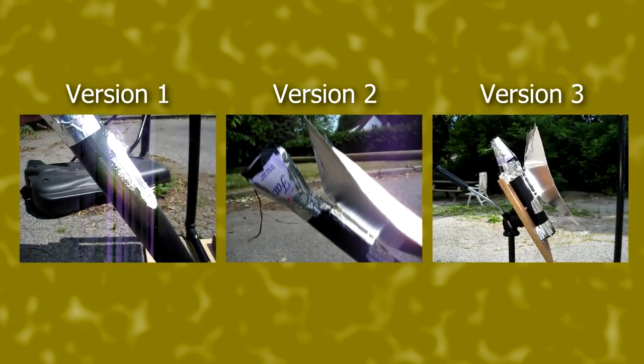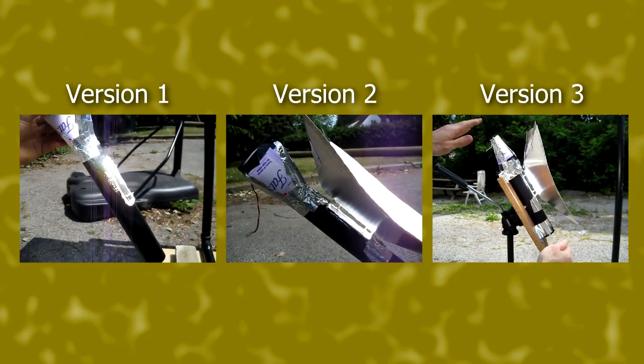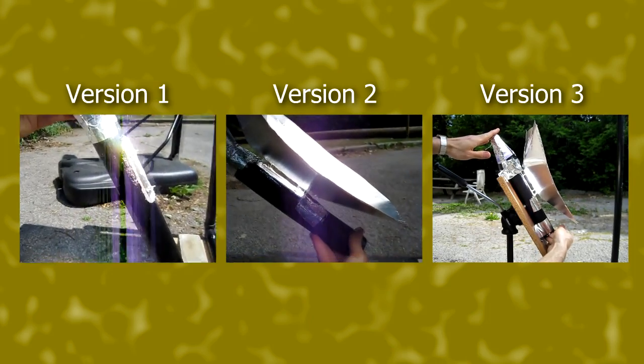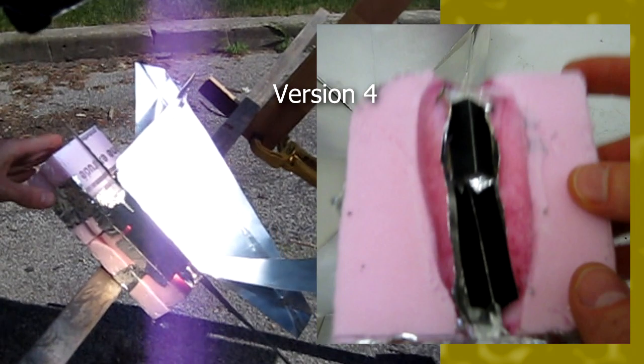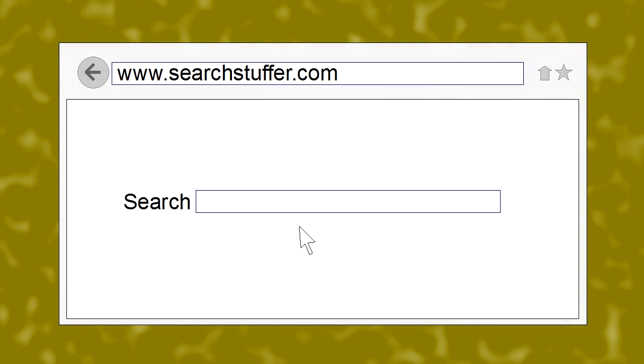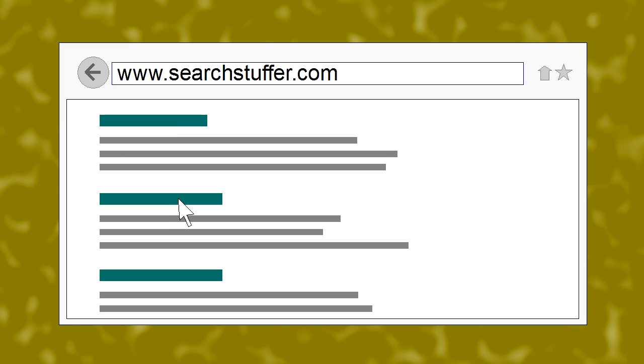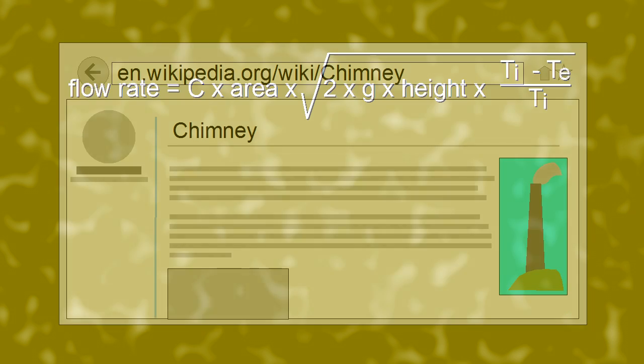I started out not bothering to look for any formulas. I wanted to see what I could learn without, and so I made these first three versions with poor results. Then I went crazy with insulation and made this dismal failure. So finally I started searching online for help and ended up on Wikipedia's chimney page, which had this formula.